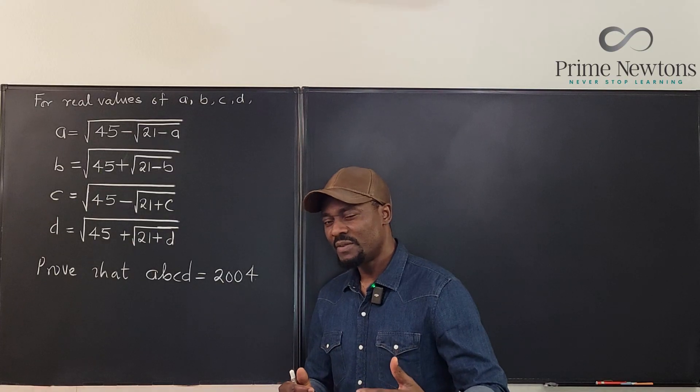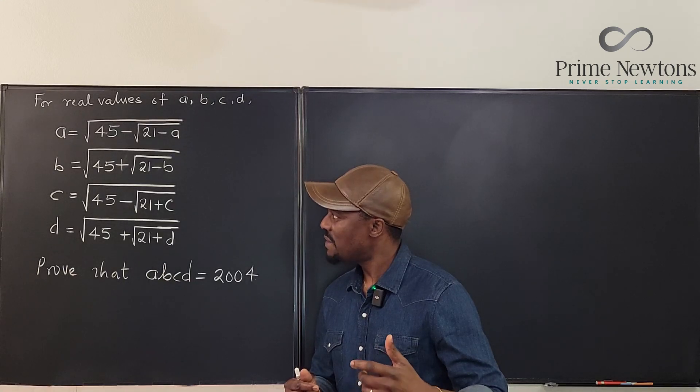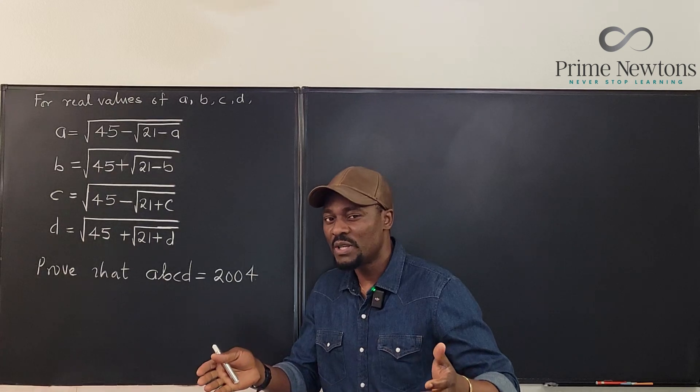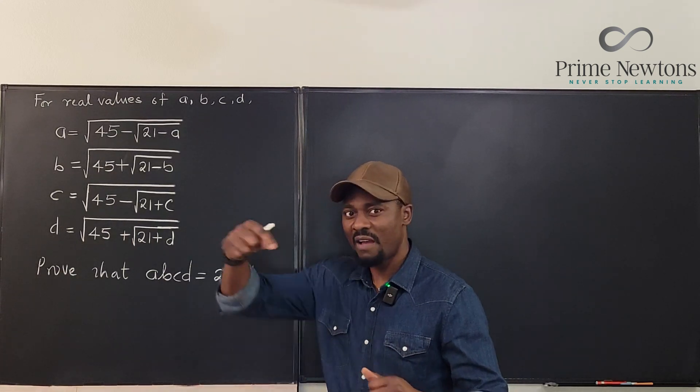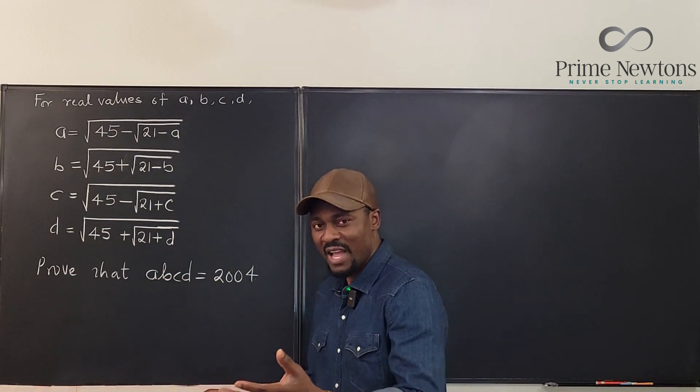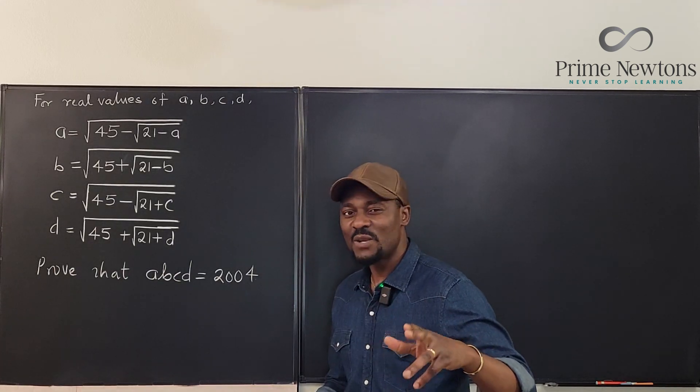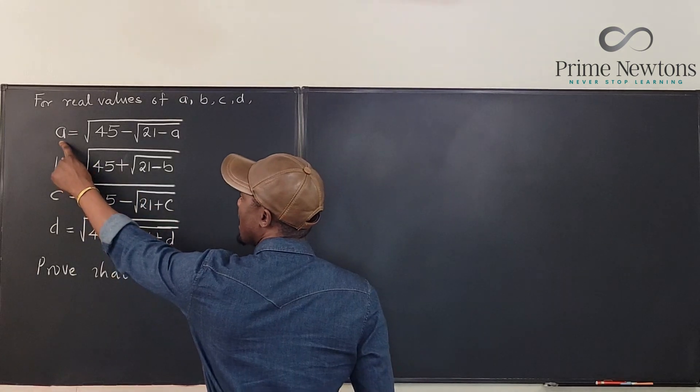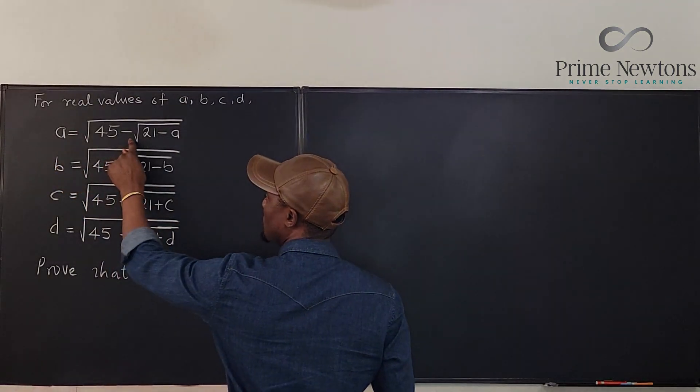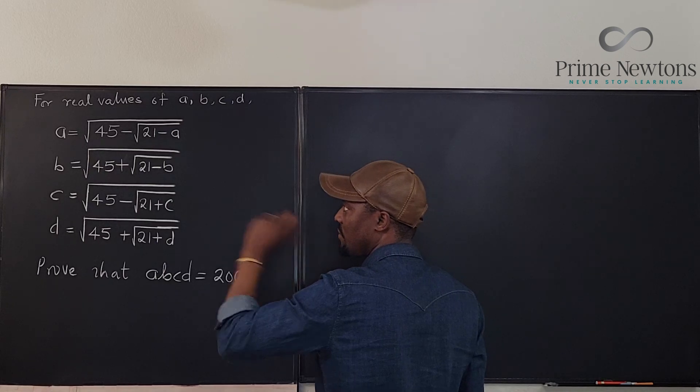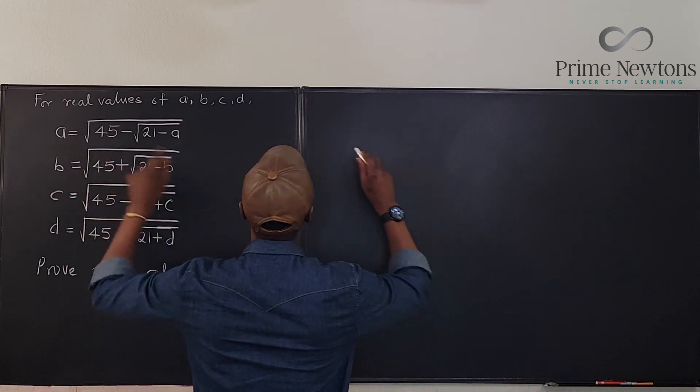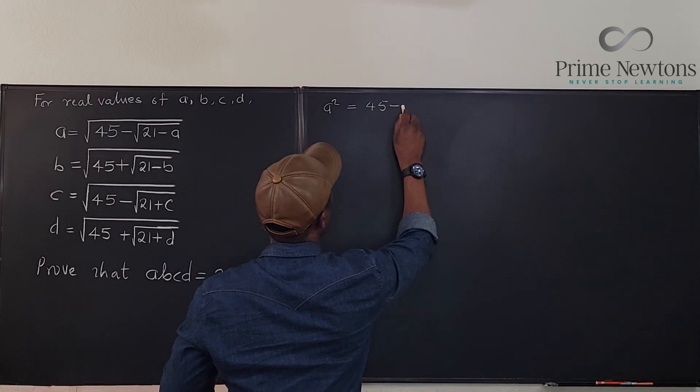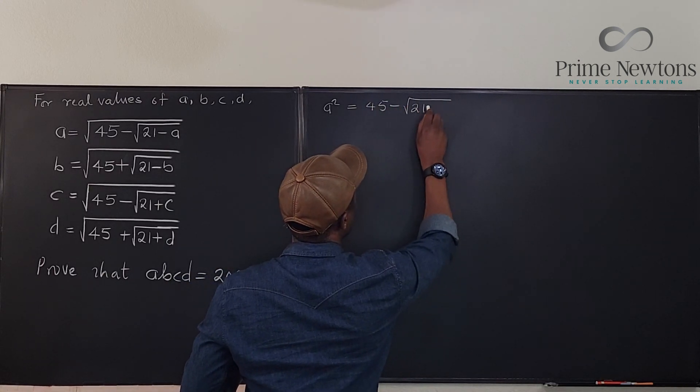So the first thing you would observe in this problem is that it looks like A, B, C, and D are what you get when you try to solve a polynomial equation. You know, when you start having square roots and square root, it means you solved an equation. So I try to say, what exactly was that equation? And we can see it. Let's assume that we're saying A is equal to this. We could as well say from here, let's square both sides.